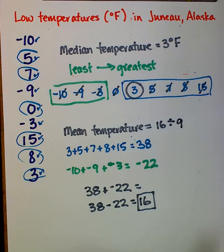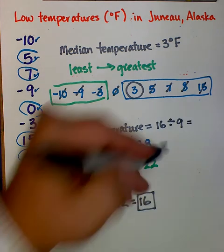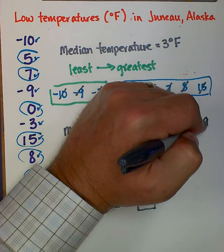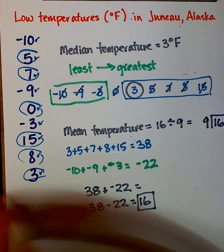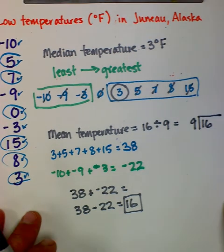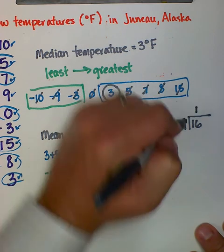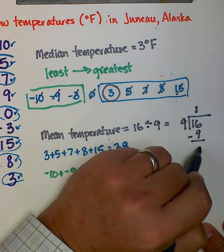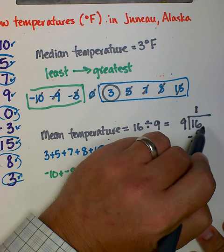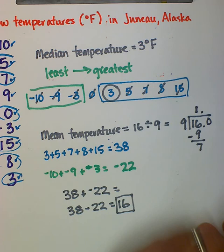OK, so 16 divided by 9. Let's see, 9 goes into 16 one whole time. 1 times 9 is 9. 16 minus 9 is 7. I can rewrite my number by adding a decimal point and a zero.